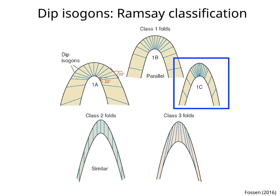Class 1C folds have weakly convergent dip isagons. The curvature of the outer arc is lower than the curvature of the inner arc. The true thickness is maximum at the hinge, and the vertical thickness is minimum at the hinge.